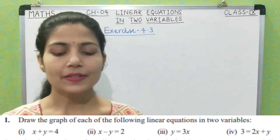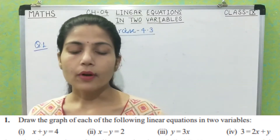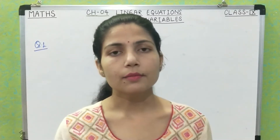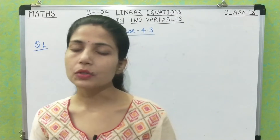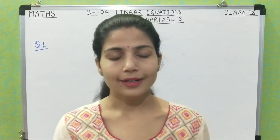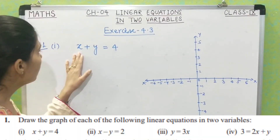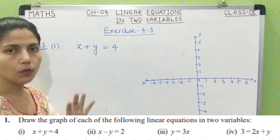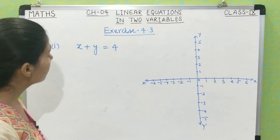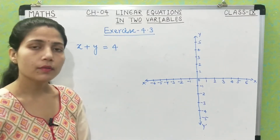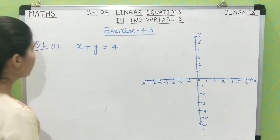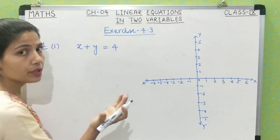Question number one is: draw the graph of each of the following linear equations in two variables. Some linear equations in two variables are given and you have to draw their graphs. So let's take the first part. The given equation is x + y = 4, and we have to draw its graph. For drawing the graph, first we will find its solutions — minimum two solutions. Let's see the solution table.